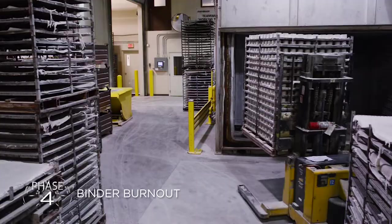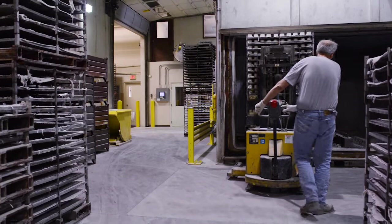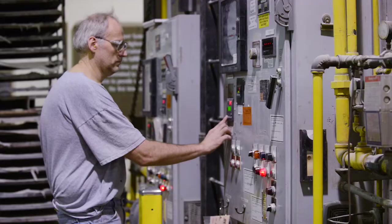Racks of pressed MOVs are loaded into low temperature ovens and baked to remove the organic materials for 24 hours. Once the MOVs cool, they are ready for crystal growth in the high temperature kilns.